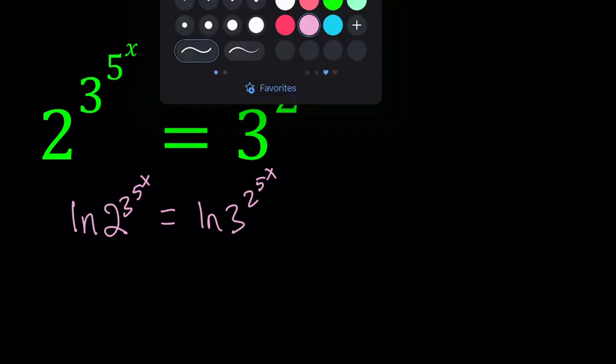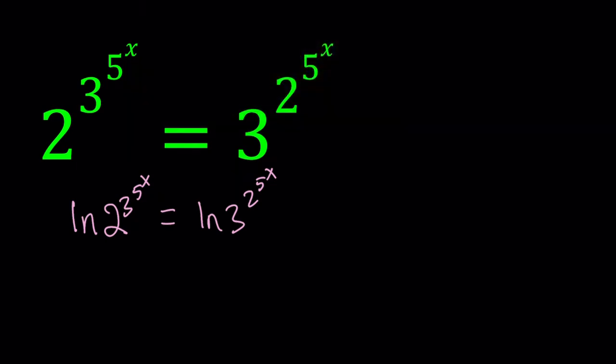Now when you ln both sides, you're going to get rid of the exponents. Not get rid of, but they're moving to the front, like this. So those are the exponents. And then from here we get the following: 3 to the power 5 to the power x multiplied by ln 2 equals 2 to the power 5 to the power x, which is the exponent, multiplied by ln 3.